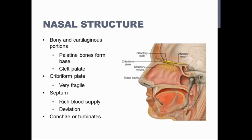The cribriform plate forms the superior boundary of the nasal cavity — you can see it here at the top. It's really fragile. The olfactory nerves — cranial nerve 1 — come through the cribriform plate and help to sense things that you're smelling using chemoreceptors. Since those olfactory nerves come through that cribriform plate, if somebody has blunt force trauma to their nose, they can easily injure that plate, causing them to lose their sense of smell. That's called anosmia.